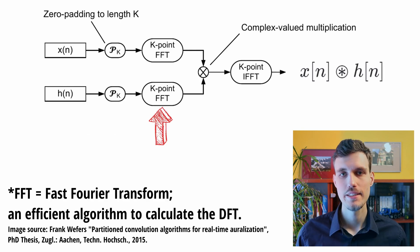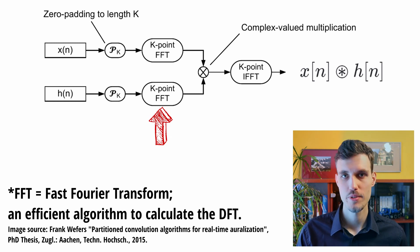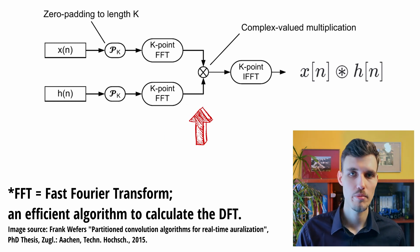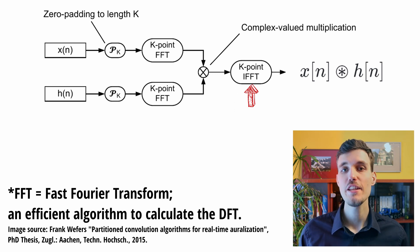We obtain the circular convolution by calculating the discrete Fourier transforms of the signals multiplying them and then calculating the inverse discrete Fourier transform of the result. Why did this happen?